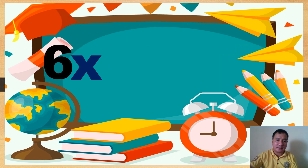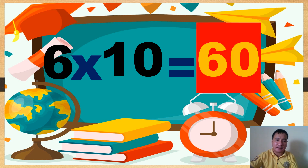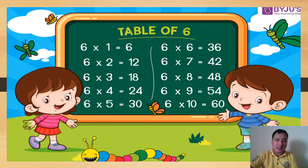Now let's review. Six times one equals six. Six times two equals 12. Six times three equals 18. Six times four equals 24. Six times five equals 30. Six times six equals 36.